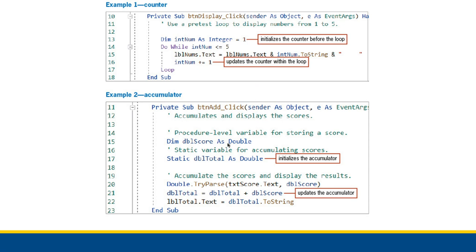Now with the accumulator, right here we are using an accumulator to hold on to scores that the user is giving us. They're keeping track of scores. Let's say they're a pinball enthusiast trying to keep track of the total amount of points they have earned over all of their games. So we give them an application where they can enter their score. It's more about keeping track of the total amount of points that they have earned over all of their games. So they enter in their score and we add it to our static accumulator right here.